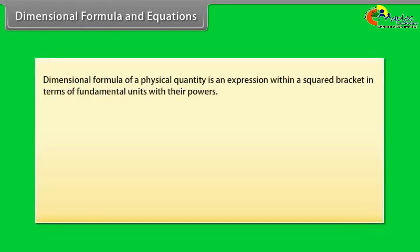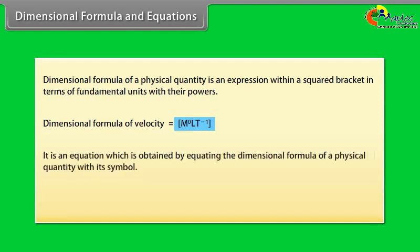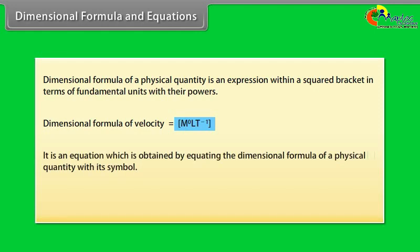Dimensional formula and equations. Dimensional formula of a physical quantity is an expression within a squared bracket in terms of fundamental units with their powers. Let us take an example: dimensional formula of velocity is equal to under brackets M to the power zero L T to the power minus one.